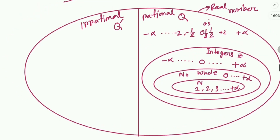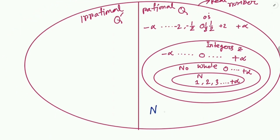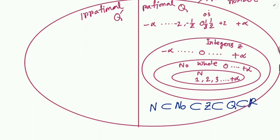Using this subset relationship: all natural numbers N are a subset of whole numbers N-naught; all whole numbers are a subset of integers Z; all integers are a subset of rational numbers Q; and all rational numbers Q are a subset of real numbers R. This relationship is very helpful for remembering the definitions of different kinds of numbers.